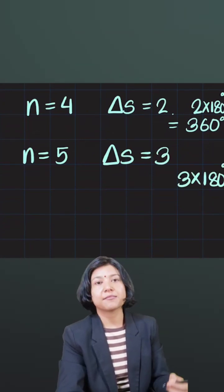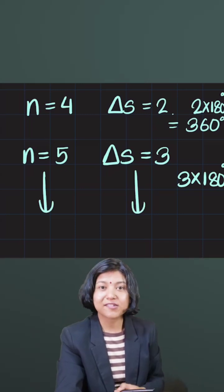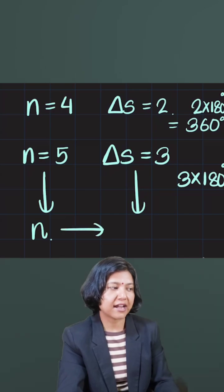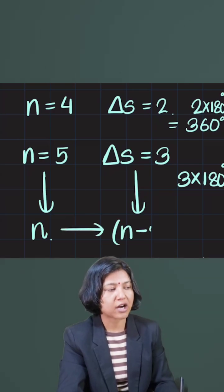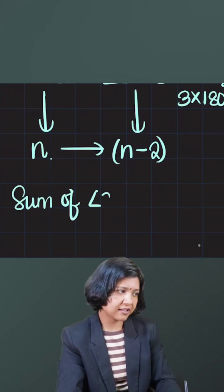So the trick is, every time whatever number of sides you have, the number of triangles formed is always two less. If n is the number of sides, then n minus two is the number of triangles formed. And hence to find the sum of angles, we always take the number of triangles formed, which is n minus two, and we just times it with 180.